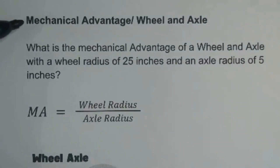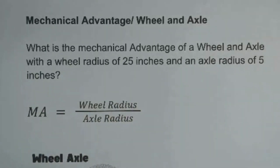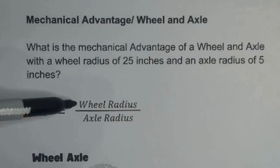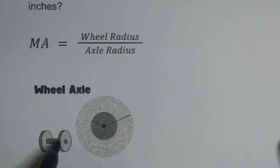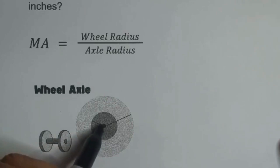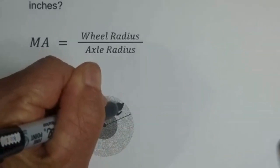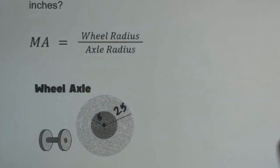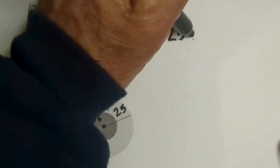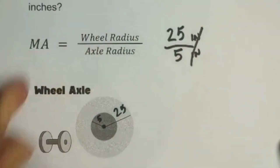Let's go over how to calculate the mechanical advantage of a wheel and axle. The formula is wheel radius divided by axle radius. What is the mechanical advantage of a wheel and axle with a wheel radius of 25 and an axle radius of 5? The radius of the wheel is 25 inches and the axle is 5 inches. Plugging in: 25 inches divided by 5 inches — the units cancel — gives a mechanical advantage of 5.